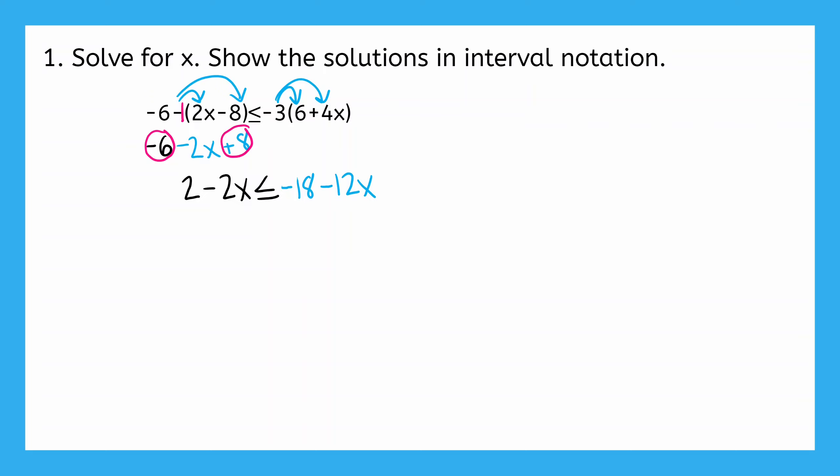Since I have variables on both sides of my inequality, I need to cancel one of these terms to bring them together. It doesn't matter whether I choose to cancel the negative 2x on the left or the negative 12x on the right, because both will work. In this first method, I'm going to cancel the negative 12x because canceling the smaller term will help to avoid negative coefficients.